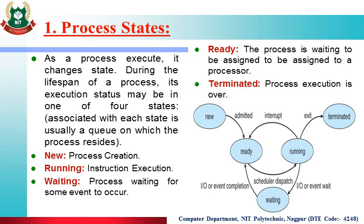When a process is in Running state, there are three possibilities. First: the process executes completely — the state is Terminated (exit). Second: during execution the process requires some I/O device; it requests that device and if the device is busy at that time, the process waits for it — the state is Waiting. You can see the arrow 'IO and event wait' going down. After some time when the device becomes available, the process executes with that device and then goes back to the Ready queue for starting its execution again.